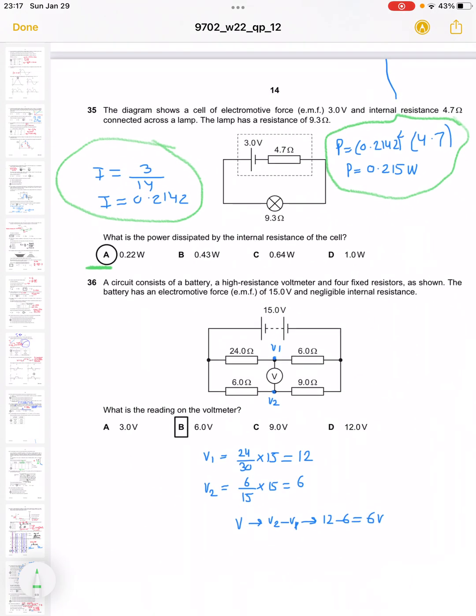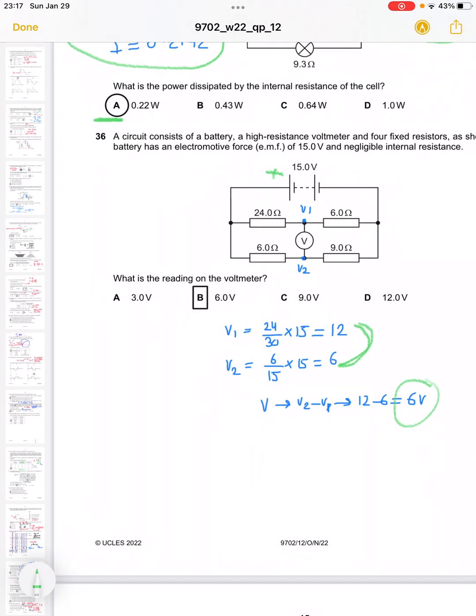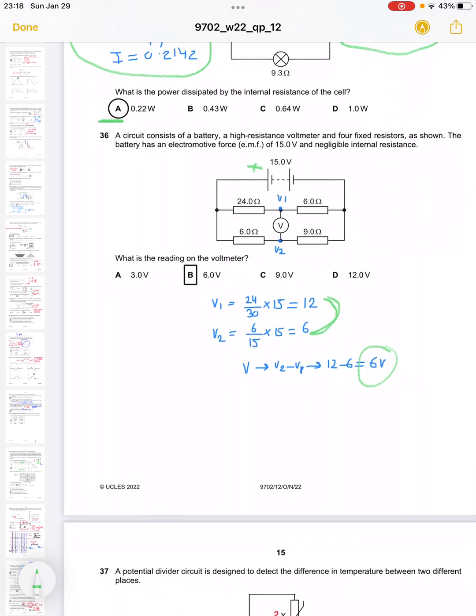Question 36 shows a circuit. What is the reading on the voltmeter? To get the reading, we need to get the voltages across V1 and V2 and subtract them. V1 is 24 over 13 to 15, which makes it 12. Ensure you take the resistor reading from the positive V1 in the decreasing to decreasing sense. V2 is 6 over 15 into 15, which is 6. Subtract those values: 12 minus 6 is 6 volts, so B is correct.